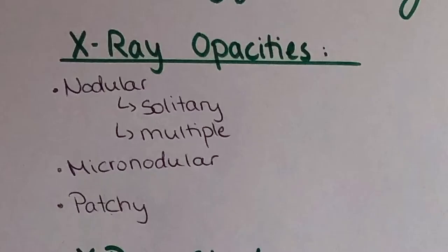I want to talk more about the different shadows, different opacities and disorders, and we will go through them one by one. If you obtained an x-ray and you see different opacities — more white structures — they can be of different types. They can be nodular, meaning they're round, and you can even have a solitary, so only one, white spot in the lung, or multiple. Then there are micronodular structures where you have much smaller nodules, or it can be patchy, so infiltrating basically the entire lung.